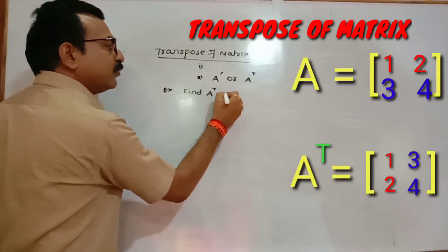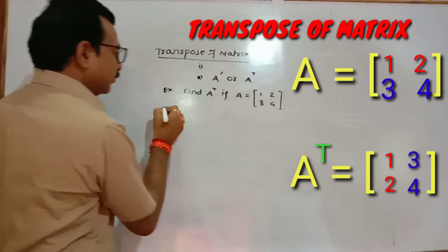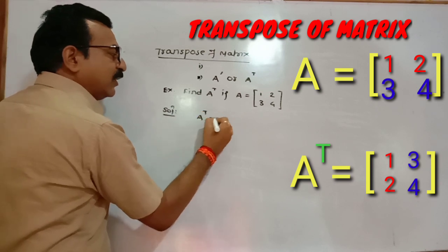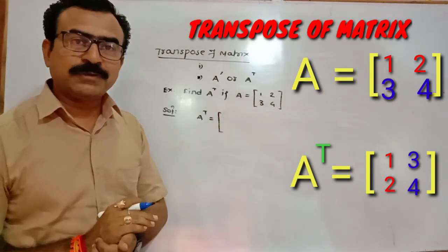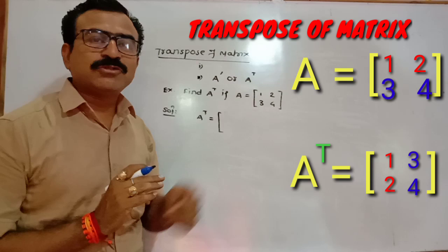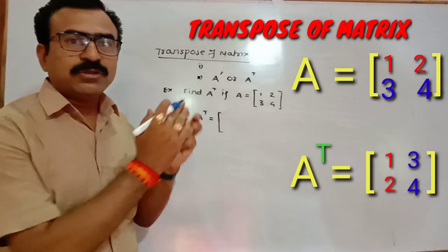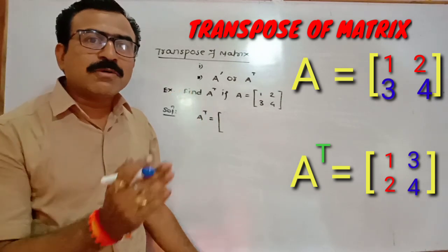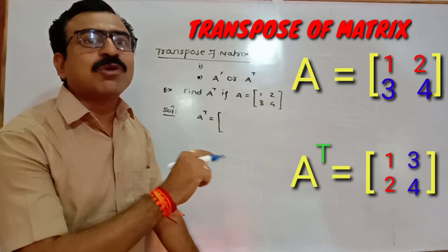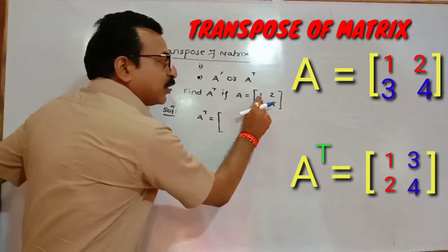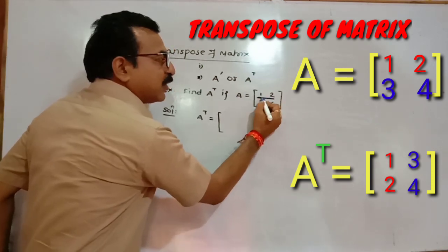Find A transpose if A is equal to this matrix. In this example, the matrix has four elements: 1, 2, 3, 4. In the first row, elements 1 and 2 are present. In the second row, elements 3 and 4 are present. According to our previous knowledge, while obtaining the transpose, convert the first row into the first column. So the elements 1 and 2 from the first row go into the first column.